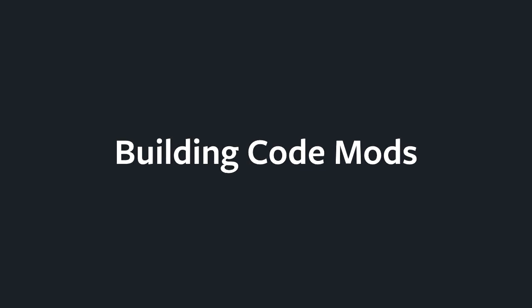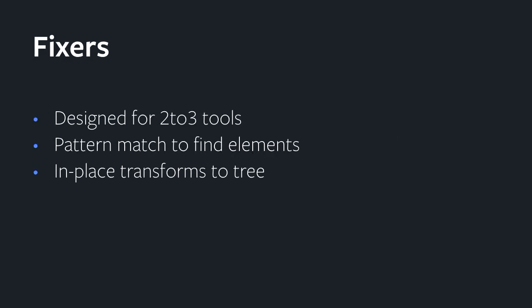Ultimately, we really just want to build code mods with this. lib2to3 provides a concept of fixers, which represent individual pieces of the 2-to-3 conversion tool — things like moving from the print statement to the print function, or changing the way integer division works. We actually want to build our own fixers to do this, which gives us a way to inspect the syntax tree and make changes to it. Fixers use the concept of pattern matching, which is a string to represent the grammar we're looking for, and then a transform method to actually perform the transform once the match is made.